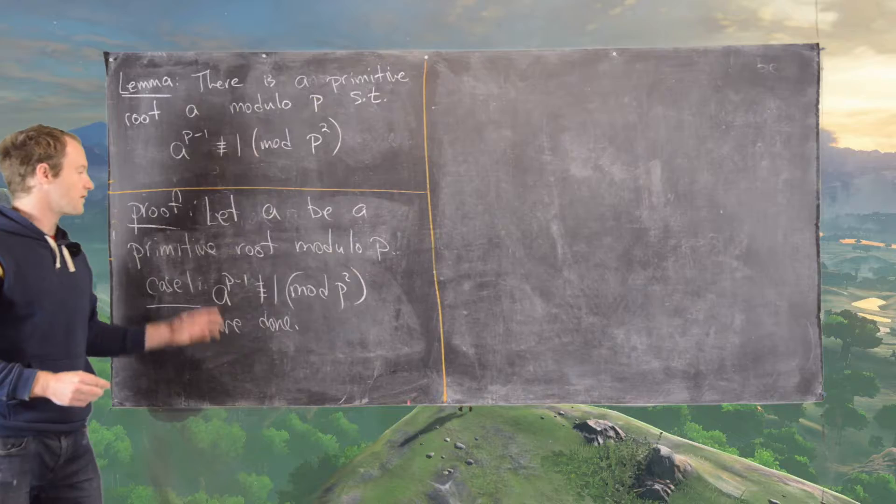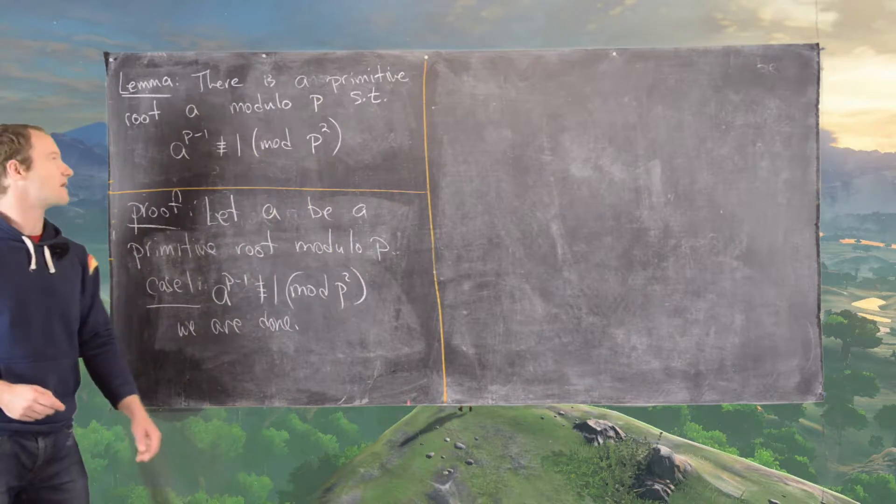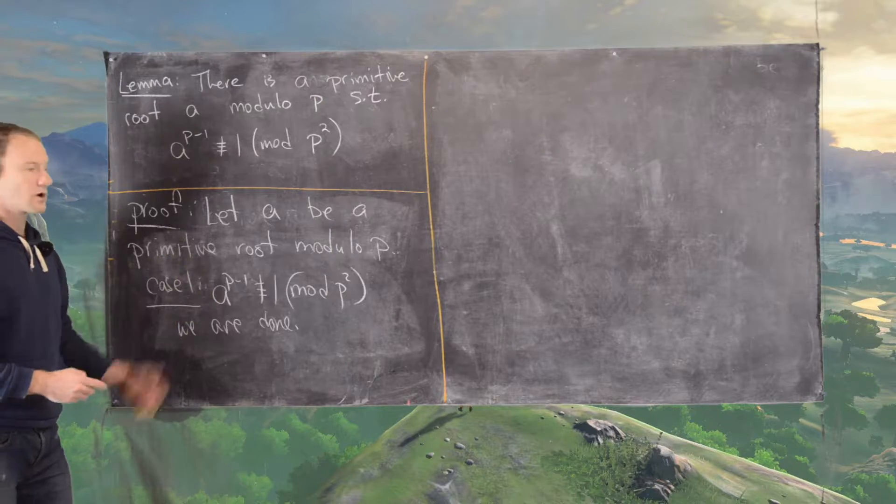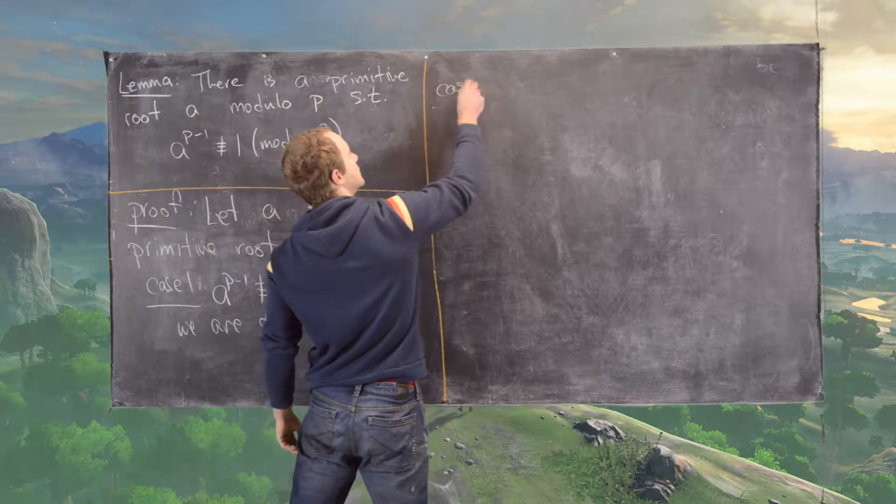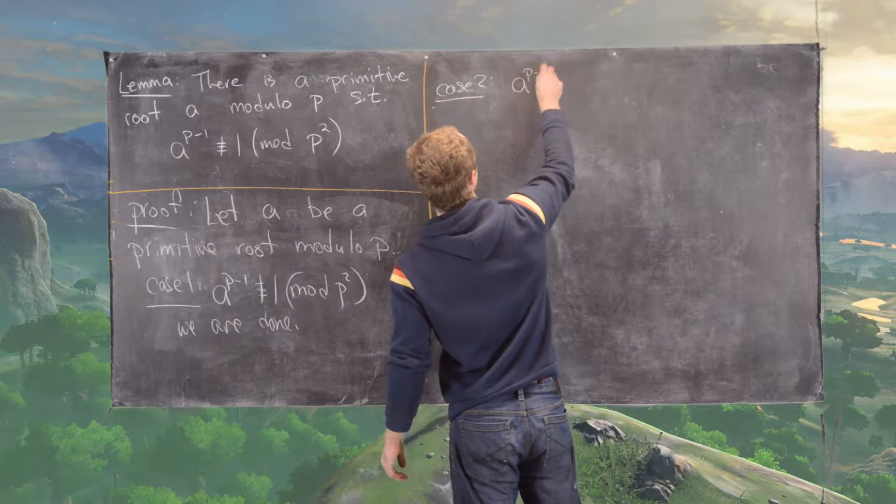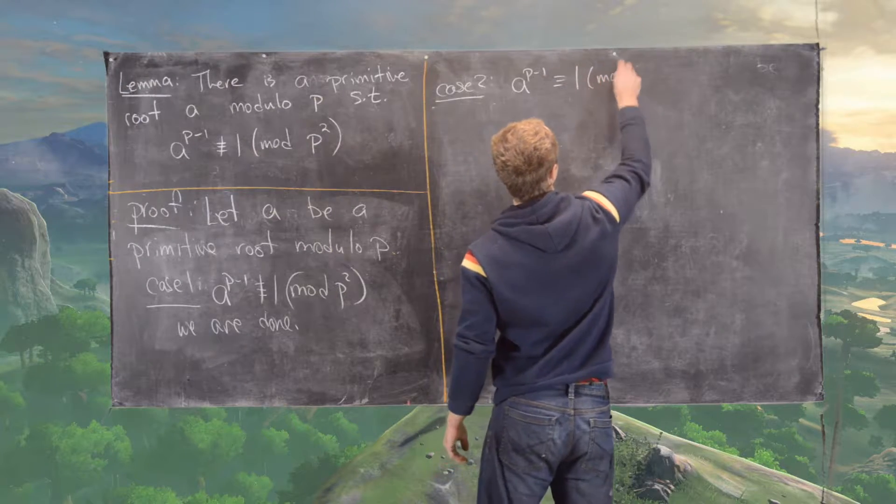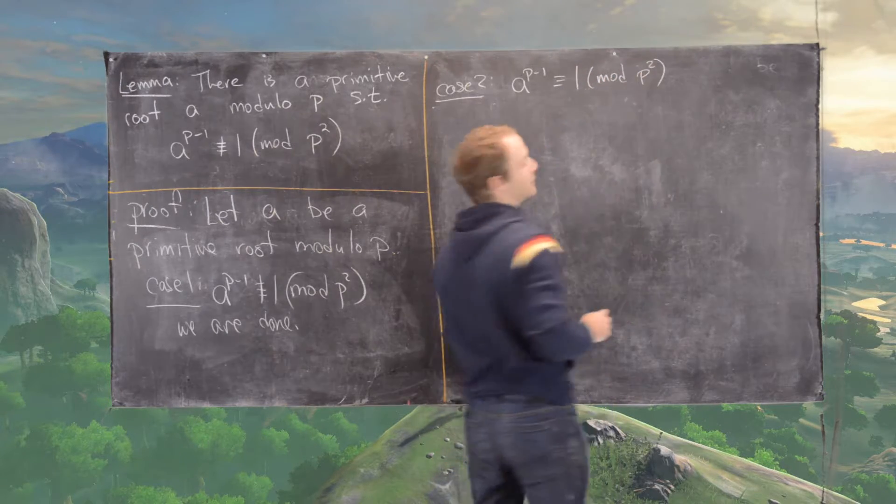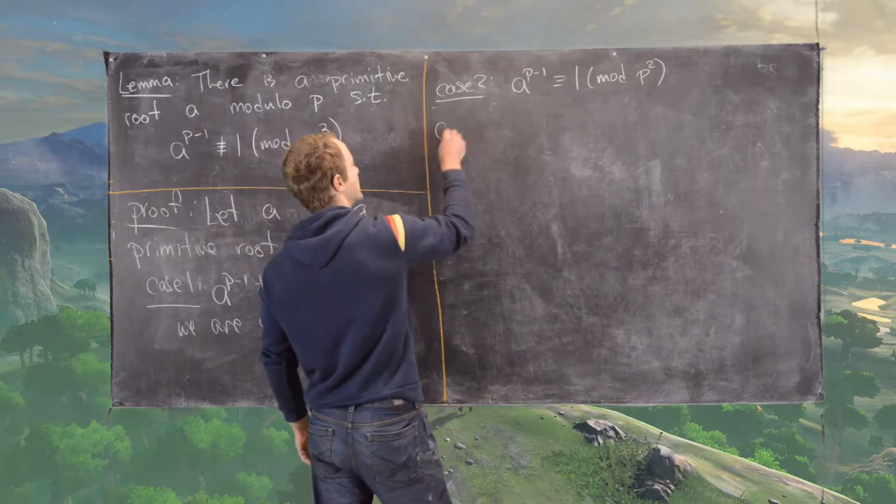So if we were lucky enough to choose initially one that satisfied the conclusion of this lemma, then we're already done. So we might as well move on to case two, which is the interesting one. And that is a to the p minus one is congruent to one modulo p squared. And in that case, we want to consider the following.